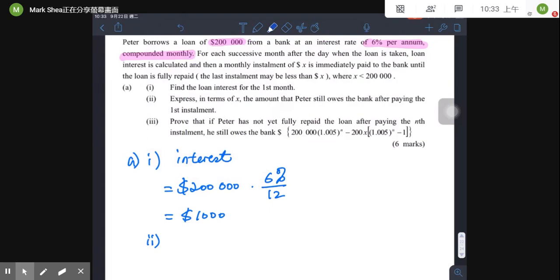Peter will have a monthly installment of X dollars. Okay, so it means that after one month, the money Peter owes to the bank is 200,000 plus 1,000 total amount. However, he will pay back to the bank by